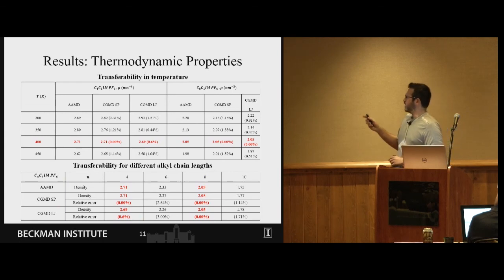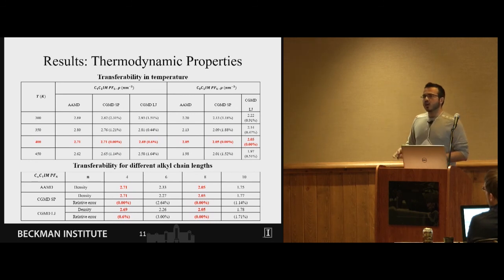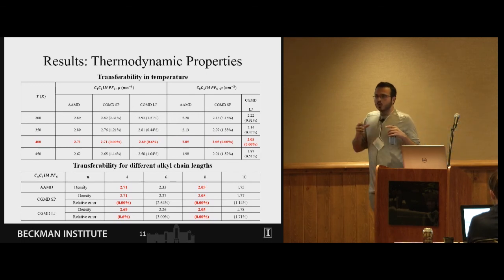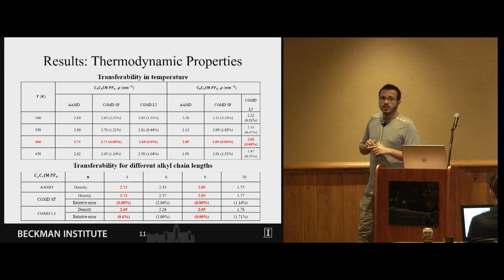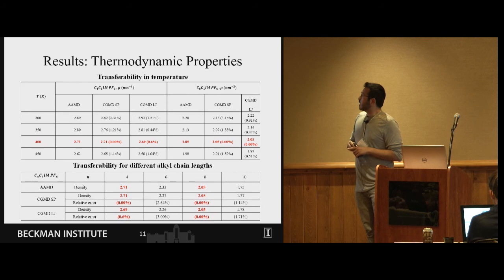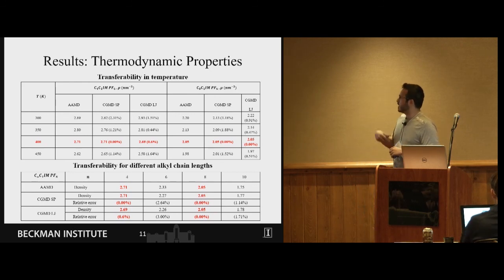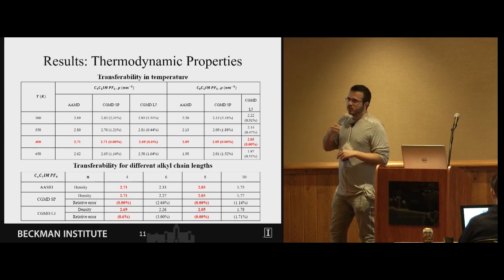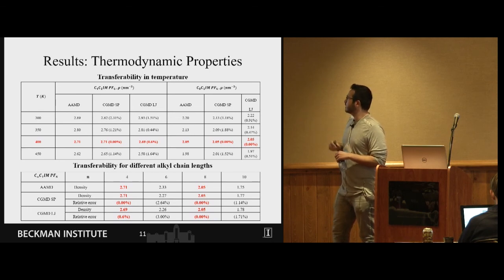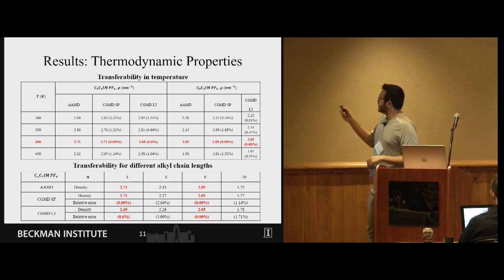We also use Lagrange multiplier and constraint optimization in order to reproduce thermodynamic properties. When we are doing coarse graining we lose some degrees of freedom and our system is not behaving in a similar manner except for the RDF part. So we added this constraint to our method and we developed the math behind it and then we added it to the VOTCA package. We did the simulation and MD simulation in NVT ensemble but we calculate these properties in NPT ensemble which is totally different. We saw that there is a good match between all atom and CG system and here you can see that maximum error is three percent.